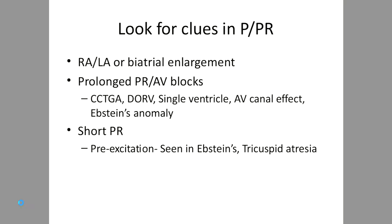Having confirmed situs solitus, look at each ECG waveform. P-wave reflects right or left atrial enlargement; many conditions can cause this and must be interpreted in the context of clinical evaluation. Prolonged PR intervals or AV blocks can occur independently or as part of congenital heart disease — corrected transposition, double outlet right ventricle, single ventricle, AV canal defects, and Ebstein's anomaly — mostly due to conduction system abnormality. Short PR interval with pre-excitation can be a clue to Ebstein's anomaly, corrected TGA, or Ebstein's tricuspid variants.